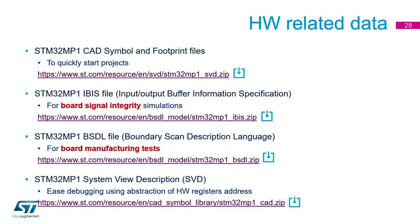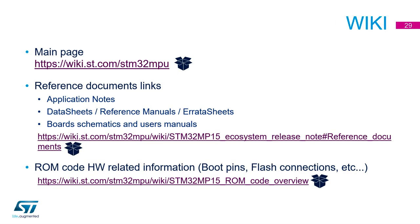Finally, we have the wiki, which contains all the useful information — you saw slides from it earlier today. You can click through and find everything: application notes, data sheets, reference manuals, errata sheets, board schematics, and user manuals for each of the boards. These can also be found on the main st.com site. On the wiki you can also find all ROM code and hardware-related information such as boot pins and flash connections. The wiki really is the focal point for finding all the documentation and extra resources you need.